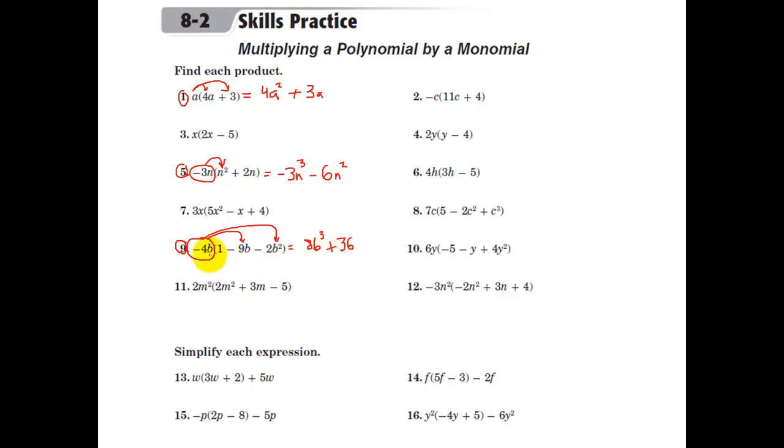And then we do the variables. b times b is b squared. And then negative 4b times 1 is just negative 4b.